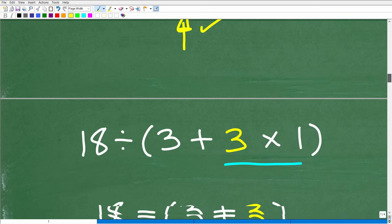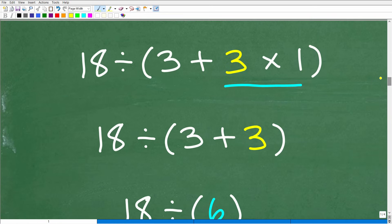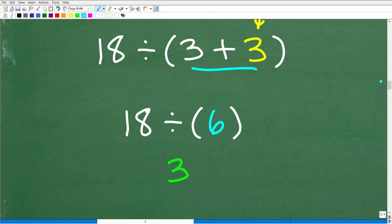Back to the problem. So we have 18 divided by parentheses, 3 plus 3 times 1 in parentheses. We're still in the parentheses part of the order of operations PEMDAS. So we're just focused here. We're not even thinking about the 18 yet. 3 times 1, of course, is 3. So we have 18 divided by parentheses, 3 plus 3. We're not done working inside the parentheses yet. So 3 plus 3, of course, is 6. So finally, we have 18 divided by 6, which, of course, is 3.